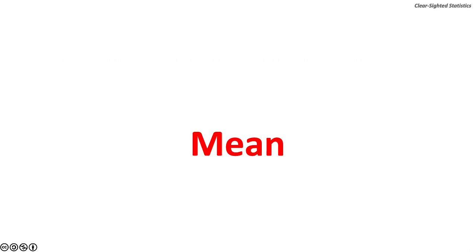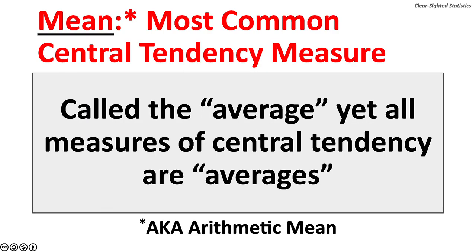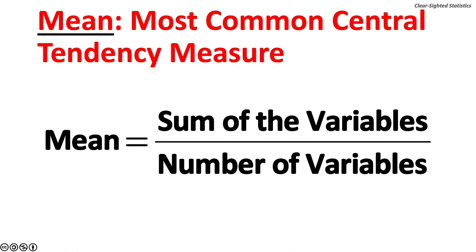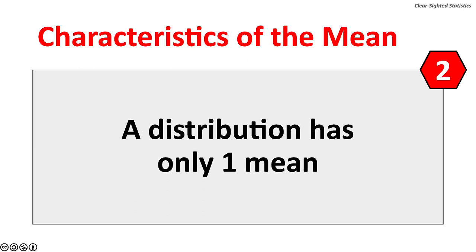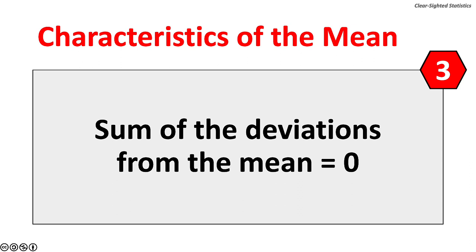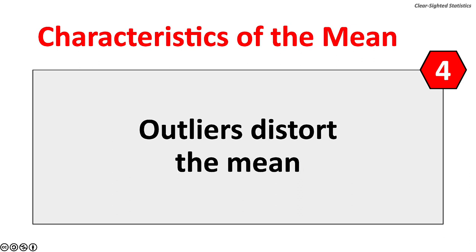Let's turn to the mean, which is the most important measure of central tendency. The mean, also known as the arithmetic mean, is the most common measure of central tendency, often called the average — though all measures of central tendency are averages. The mean is the sum of all the variables over the number of variables. There are four characteristics of the mean: it requires quantitative data (interval or ratio level); a distribution has only one mean; the sum of the deviations from the mean equals zero; and outliers distort the mean.